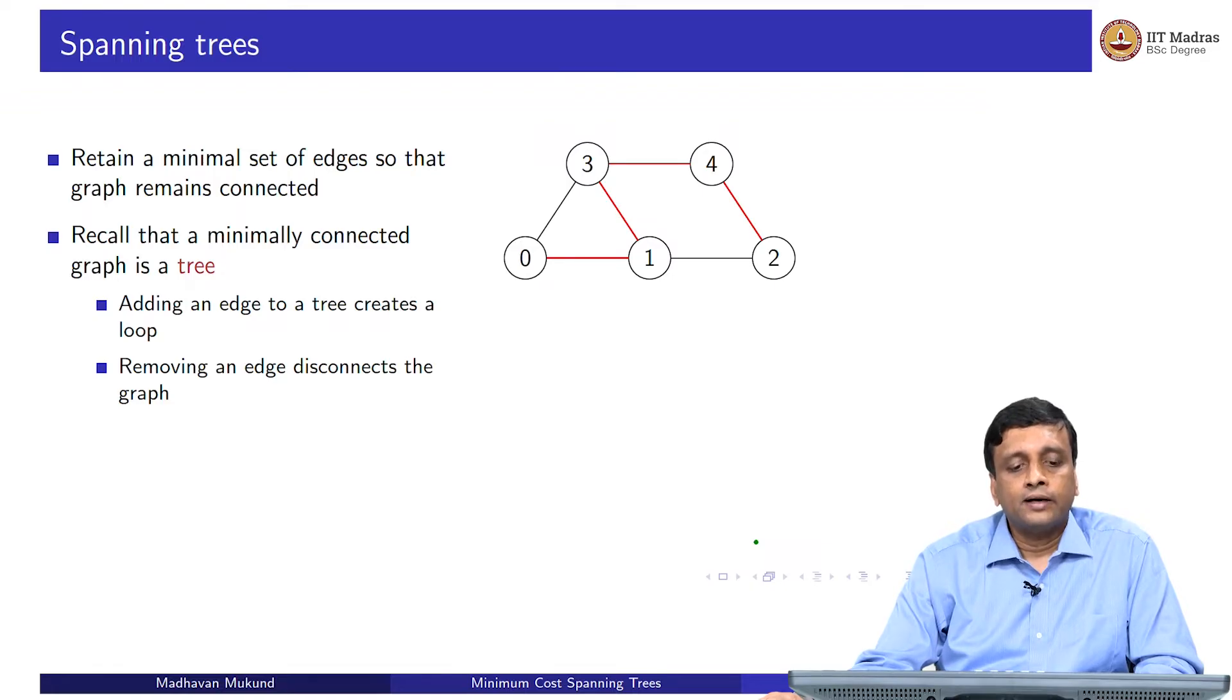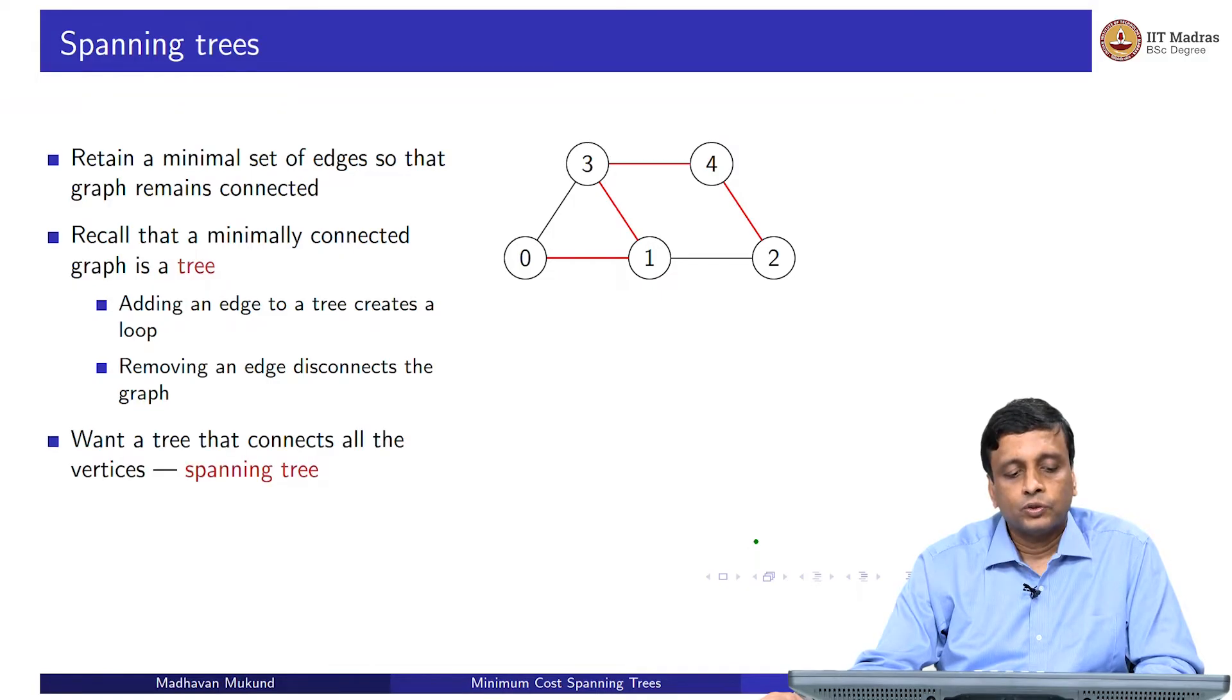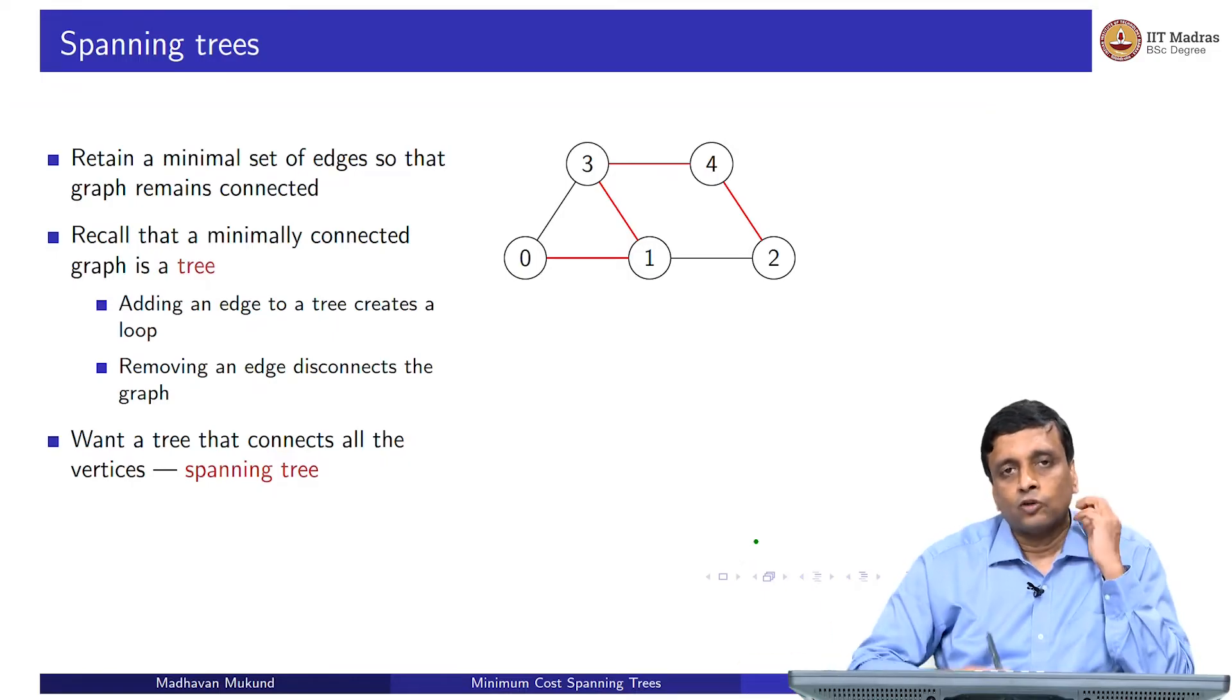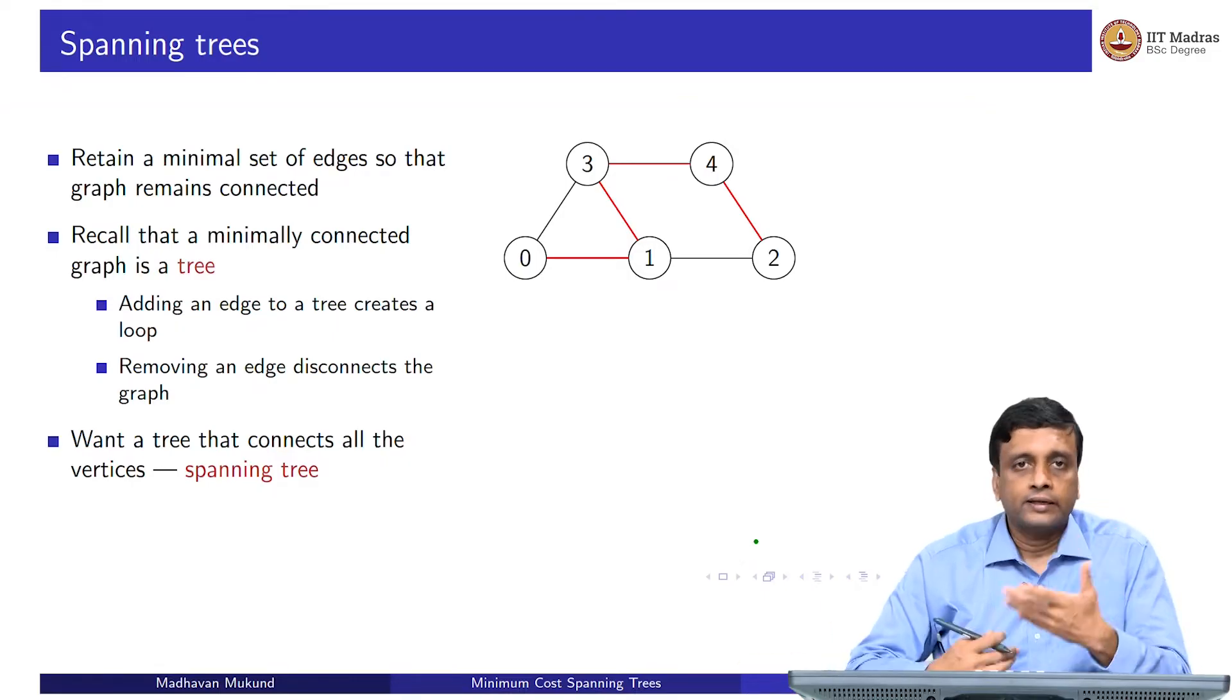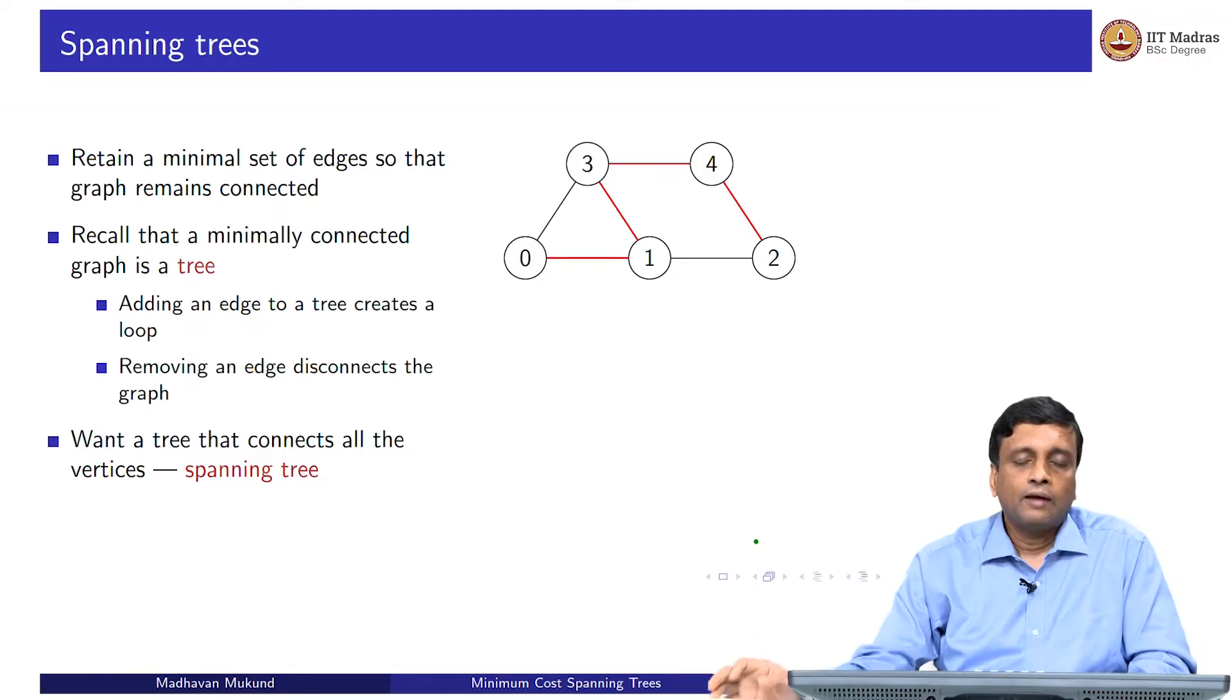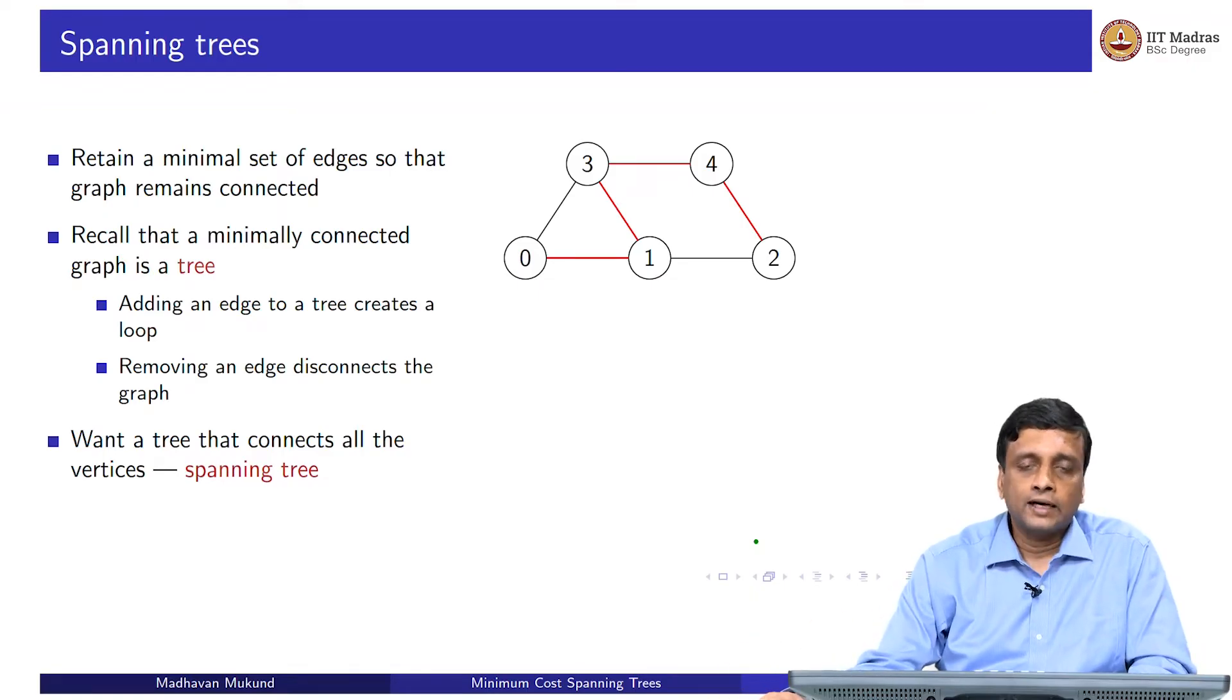A minimally connected graph is a tree. A tree is something which on n vertices has n minus 1 edges. If you add an edge to a tree, you get a loop. And if you remove an edge from a tree, you get a disconnected graph. We want a tree which is the smallest possible connected graph on n vertices, and we want it to cover all the vertices in the graph that we have. So it spans that graph. It is called a spanning tree.